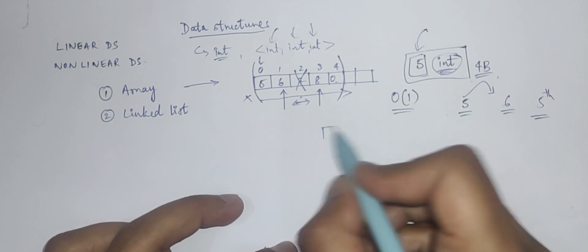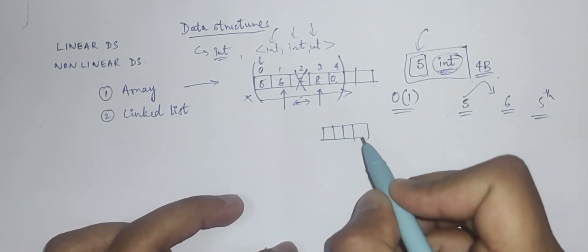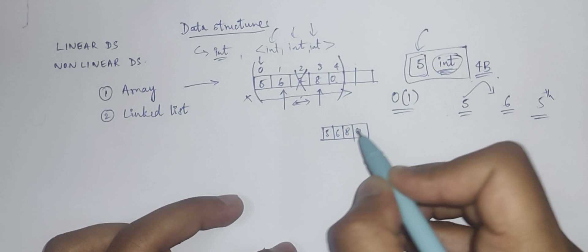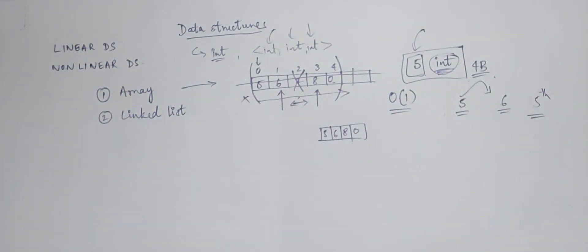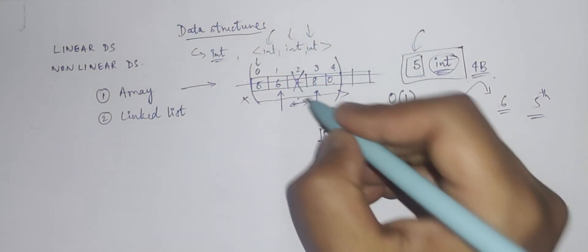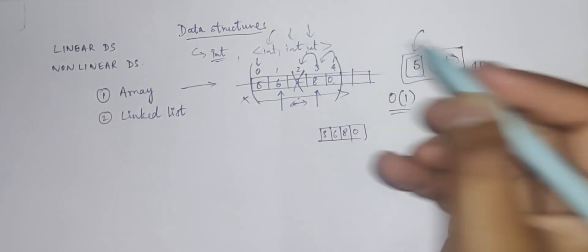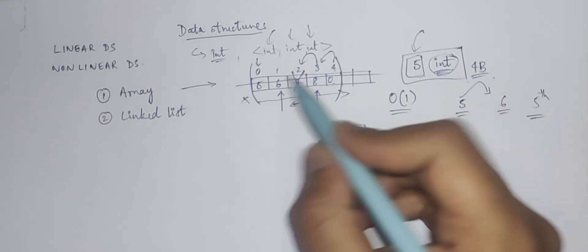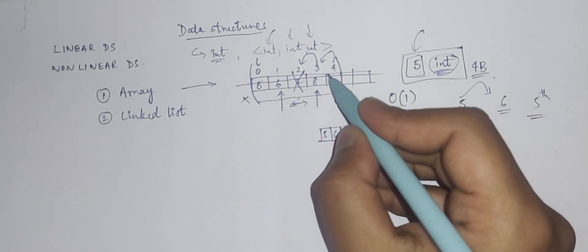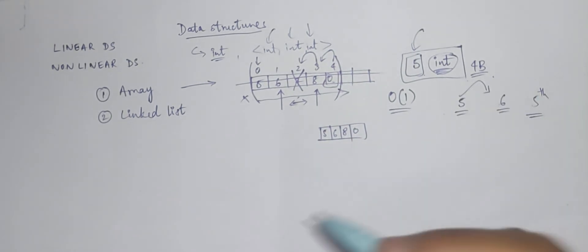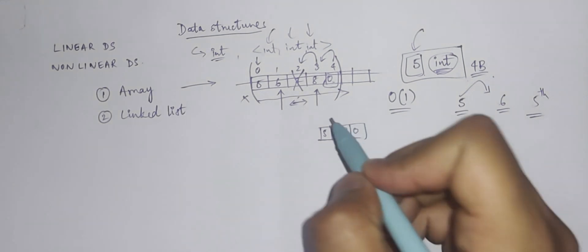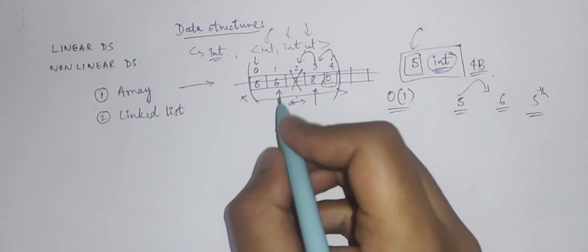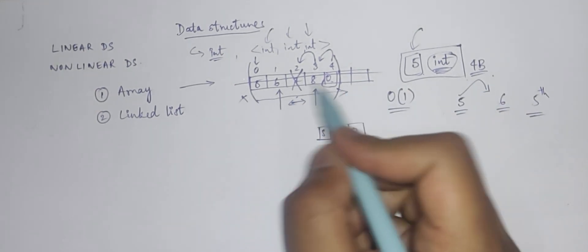The same issue applies to deletion. If you want to delete an element, you cannot directly delete it because the memory must remain contiguous. So you'd have to create a new array of size four and copy all remaining elements. You could also shift elements, but then you'd still have one empty slot. So deletion and insertion into an array is a more time-consuming process, though accessing an element always takes constant time.